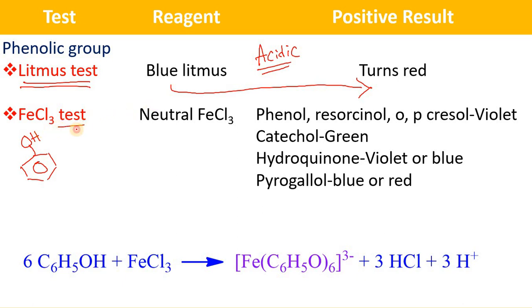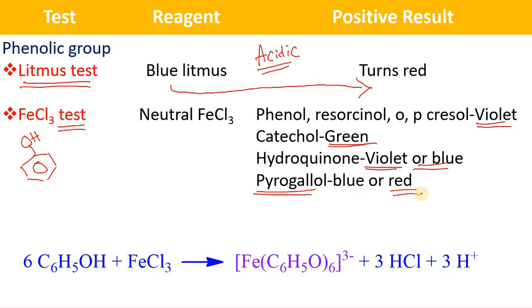The second test is the ferric chloride test. This test is very useful to identify phenol and its derivatives. If you take phenol, resorcinol, or ortho/para cresol, in this test you will get a violet color complex. In the case of catechol, there is a formation of a green colored coordination compound. Hydroquinone gives a violet or blue color coordination compound. In the case of pyrogallol, there is a formation of a blue colored complex, which is rapidly turned into a red colored complex. So you can easily identify phenol and phenolic derivatives by using the neutral ferric chloride test.